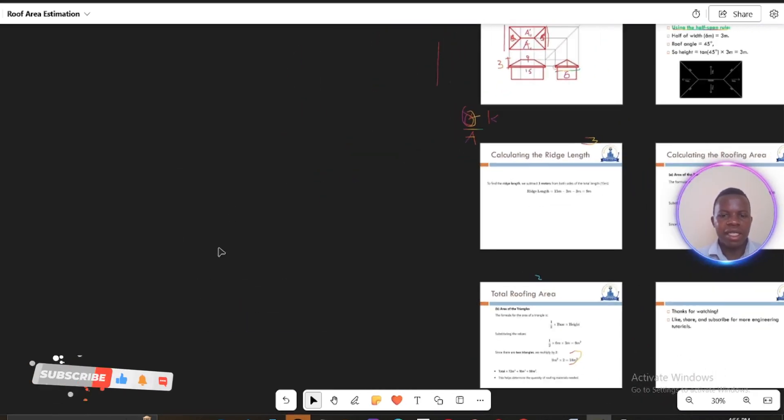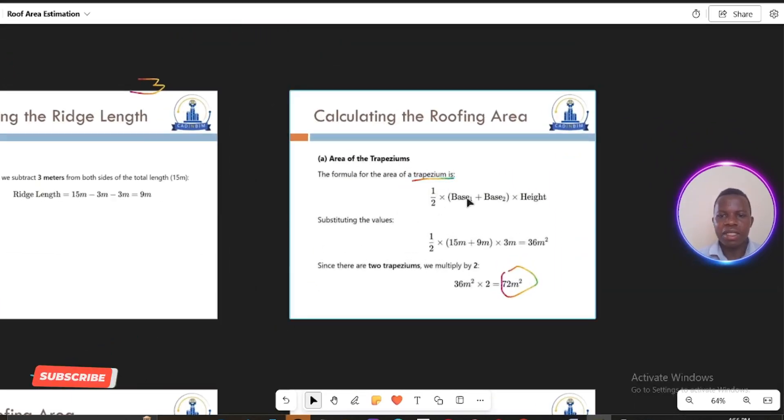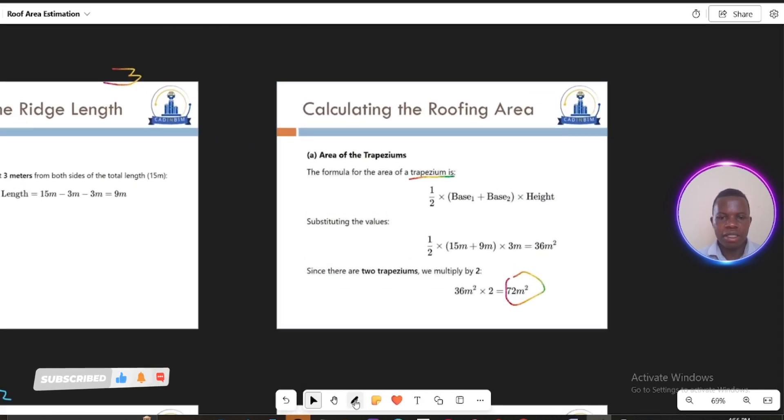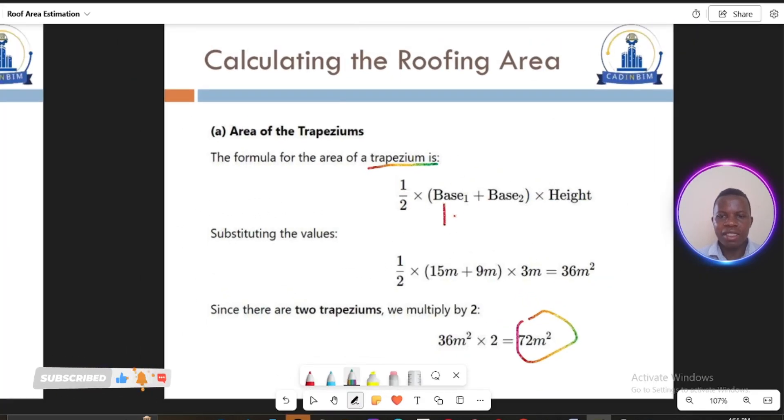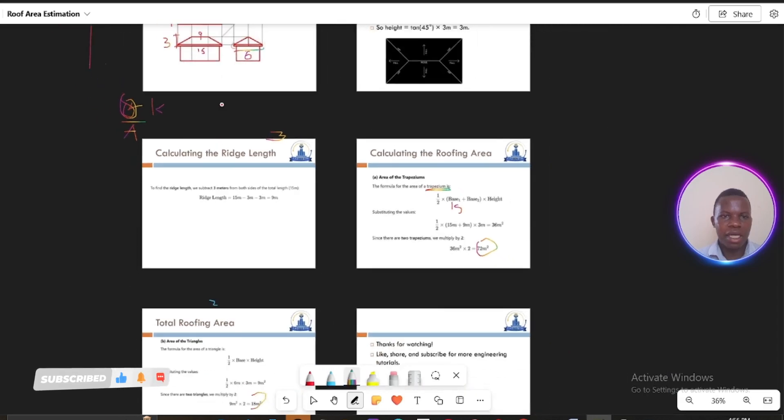You know that the area of a trapezoid is ½(base 1 + base 2) × height. The first base here that we have is 15. This one we are calculating the area of a trapezoid, I mean this area here. So ½(A + B), where B1 and B2 are base 1 and base 2.